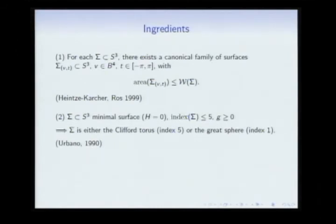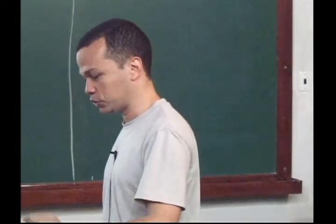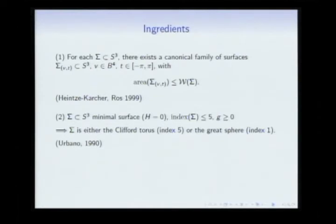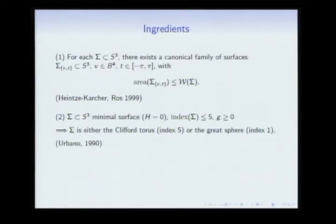The second ingredient is a characterization of the Clifford torus by its index. If you consider any minimal surface in S³ with index at most five — this needs to be general enough to handle high genus surfaces — then Urbano's 1990 theorem says the surface is either the Clifford torus (index five) or the great sphere (index one). So there are only these two possibilities. The coincidence of index five and five-dimensional family is the key observation.